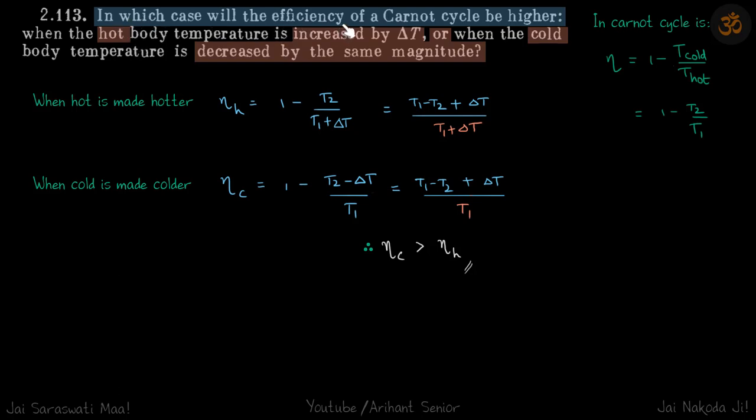In which case will the efficiency of a Carnot cycle be higher: when the hot body temperature is increased by delta T, or when the cold body temperature is decreased by the same amount?